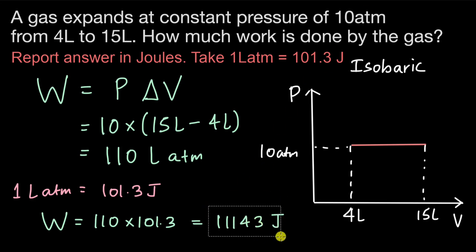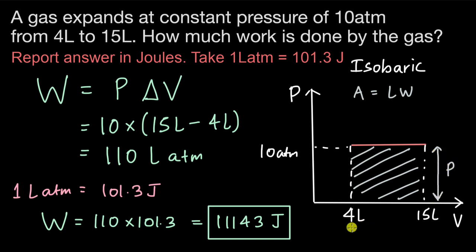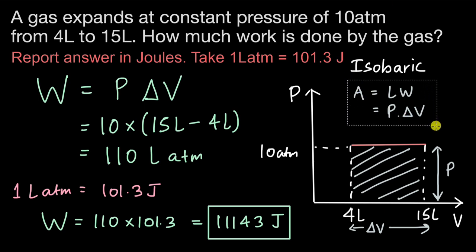So this is the work done by the gas as it expands at constant pressure from 4 liters to 15 liters. We also need to understand that the work done in a PV diagram is always the area under the curve. Looking at this area, it is a rectangle — length times width — where length is the pressure P and width is ΔV, the change in volume. So work equals P·ΔV, and the area under the PV curve is always the work done.